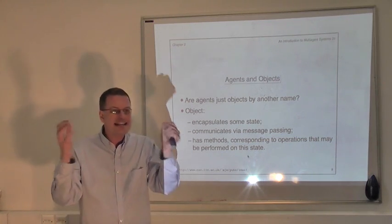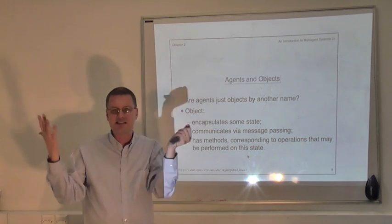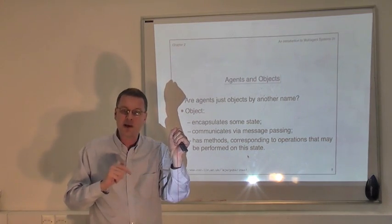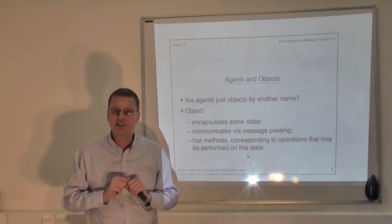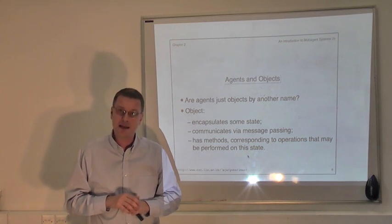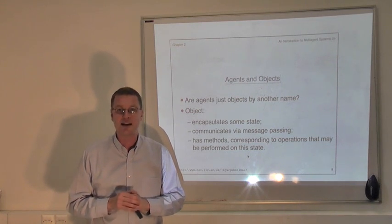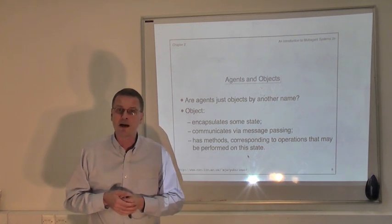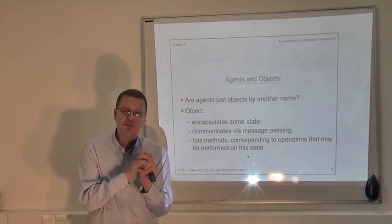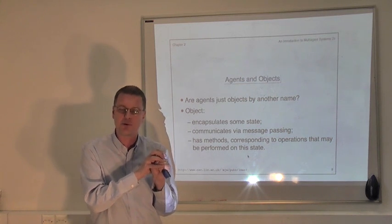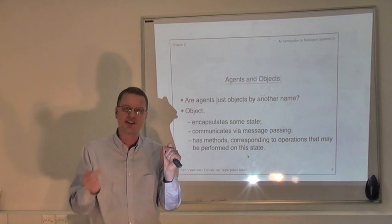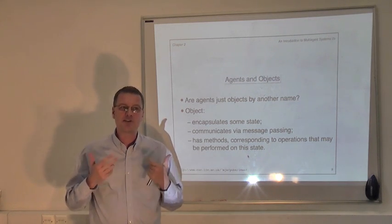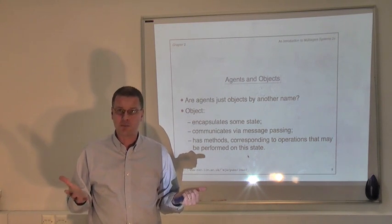Think about this in the agent world — think about two agents as being real individuals, about you and me. Do we have the idea that you can directly invoke a method upon me? Suppose you want to invoke the 'buy me a beer' method on me. Am I likely to respond to that? Well, I might buy you a beer, I might ask for some money, or I could say I'll do it if you buy me a beer next week. The point is, I have control over whether or not I actually buy you a beer. So we don't think about agents as invoking methods upon one another — we think about them as requesting one another to perform actions.